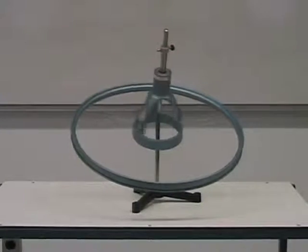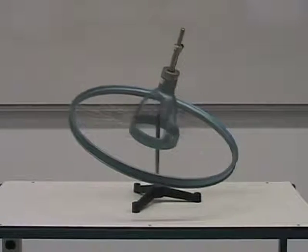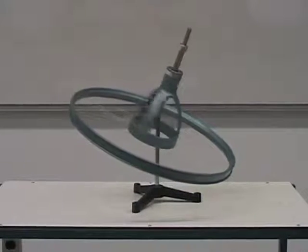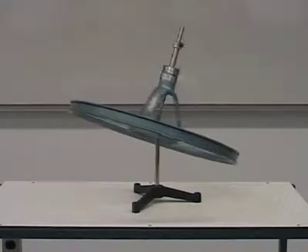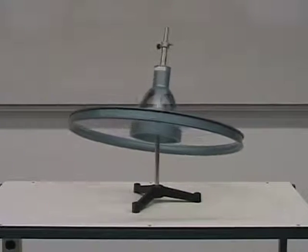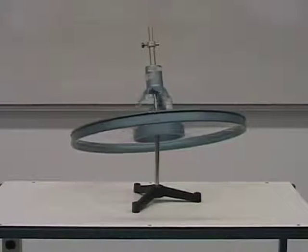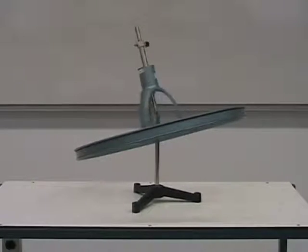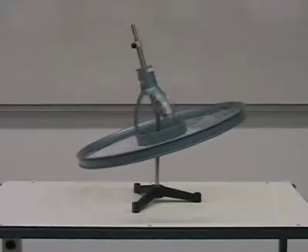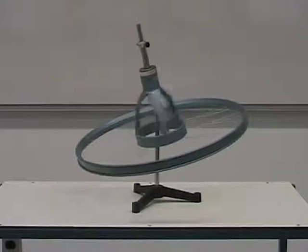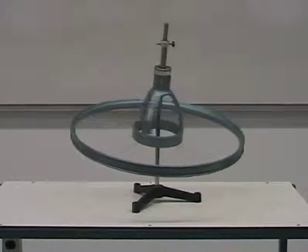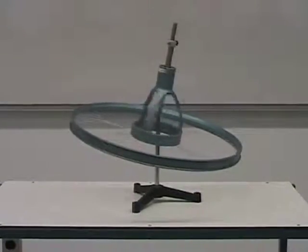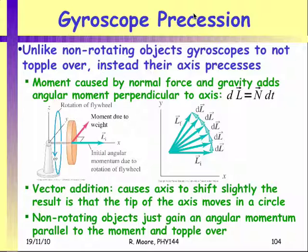That's why gyroscopes can stay up like they do. The axis remains almost horizontal. This is due to adding angular momentum vectors together, and angular momentum adds even if it's not about the same axis. There's only one angular momentum for an object — it's the sum total of all the causes of angular momentum. It doesn't necessarily have to point along the axis of rotation.